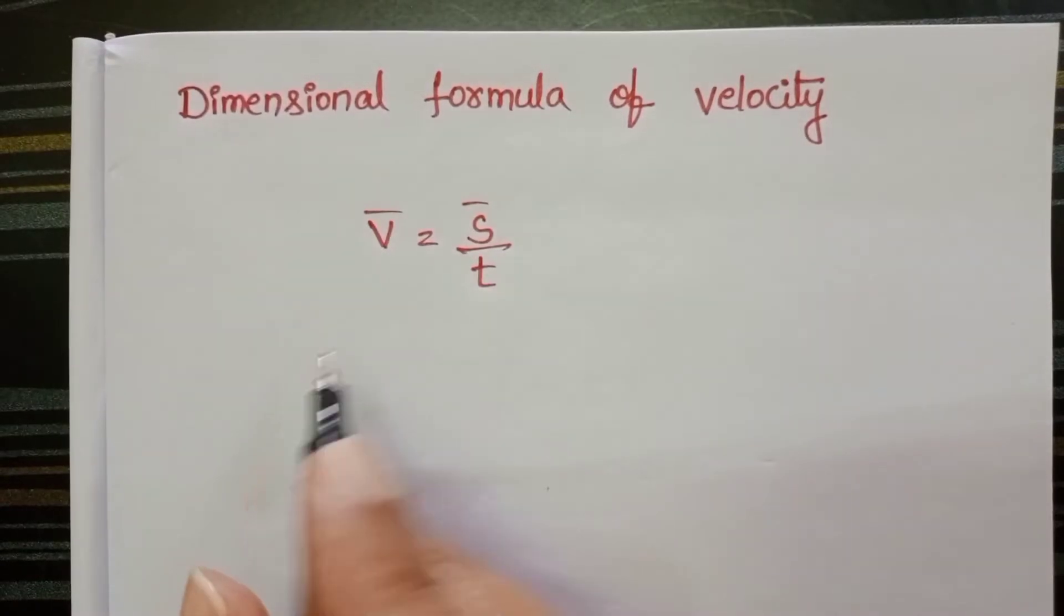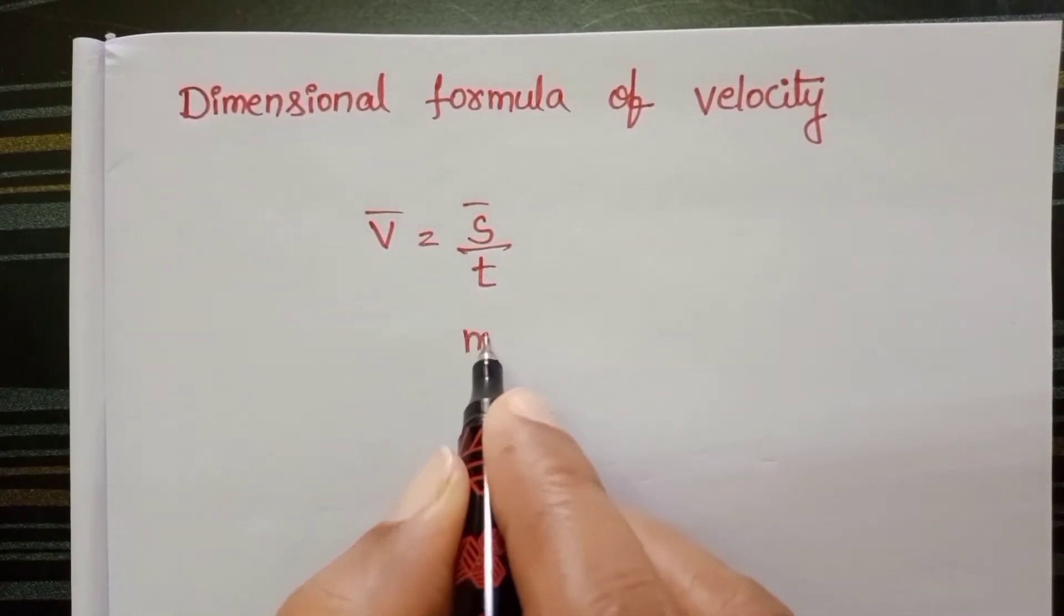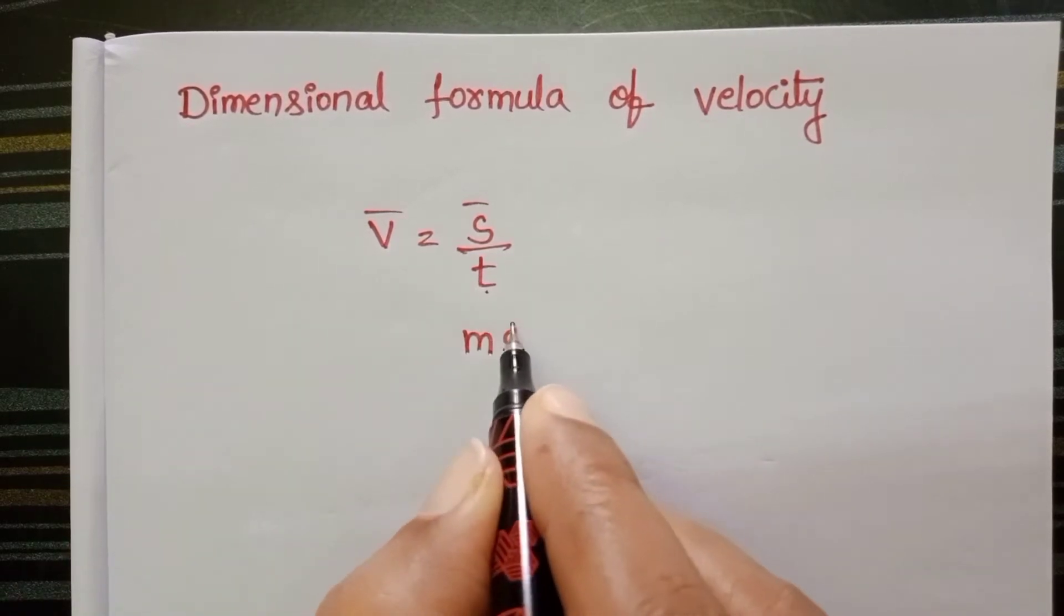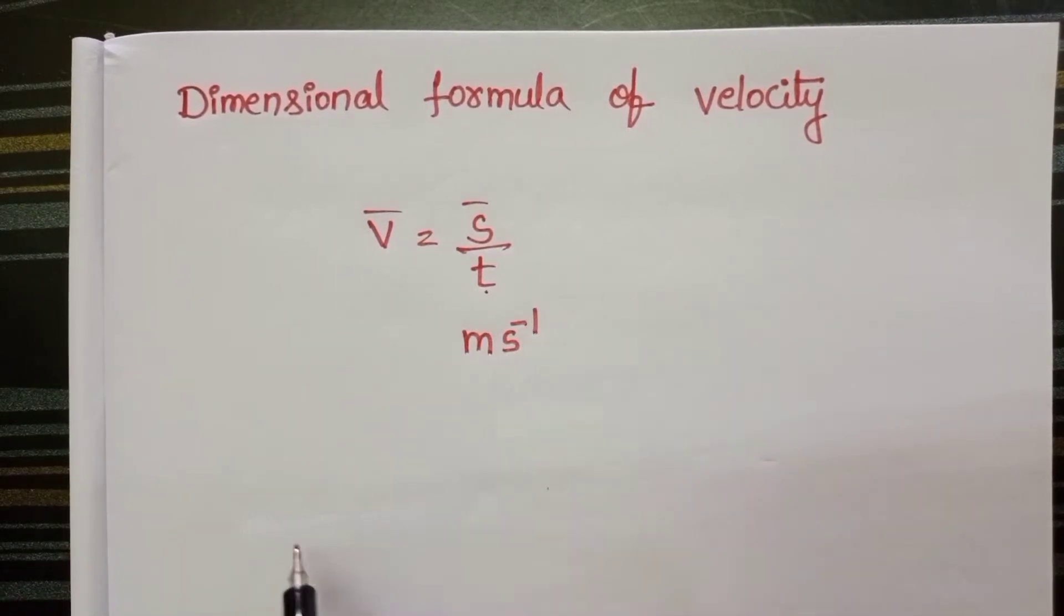SI unit of displacement is meter and SI unit of time is second. So SI unit of velocity is meter per second.